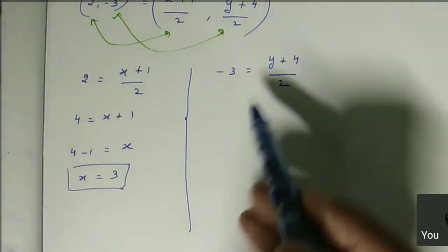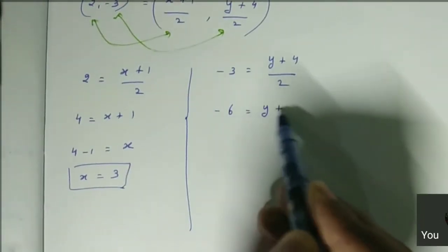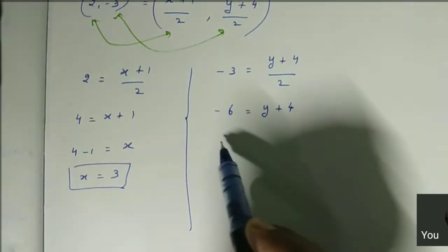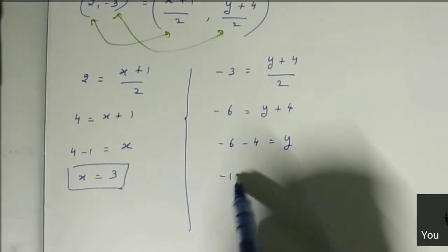Next, here, cross multiplication: -3 times 2 is -6 equals y + 4, then -6 - 4 equals y, then -10 equals y.